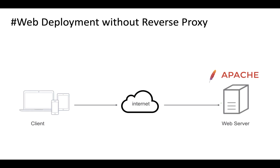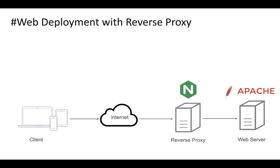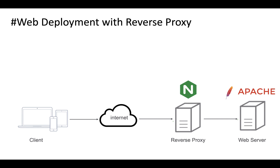This is the typical web deployment without a reverse proxy, where you have a web server and expose it through HTTP and HTTPS ports so that users can access it via the internet. With a reverse proxy, it sits in front of the web server, intercepts all incoming HTTP and HTTPS requests, and forwards them to the backend web server. So what are the benefits of a reverse proxy?